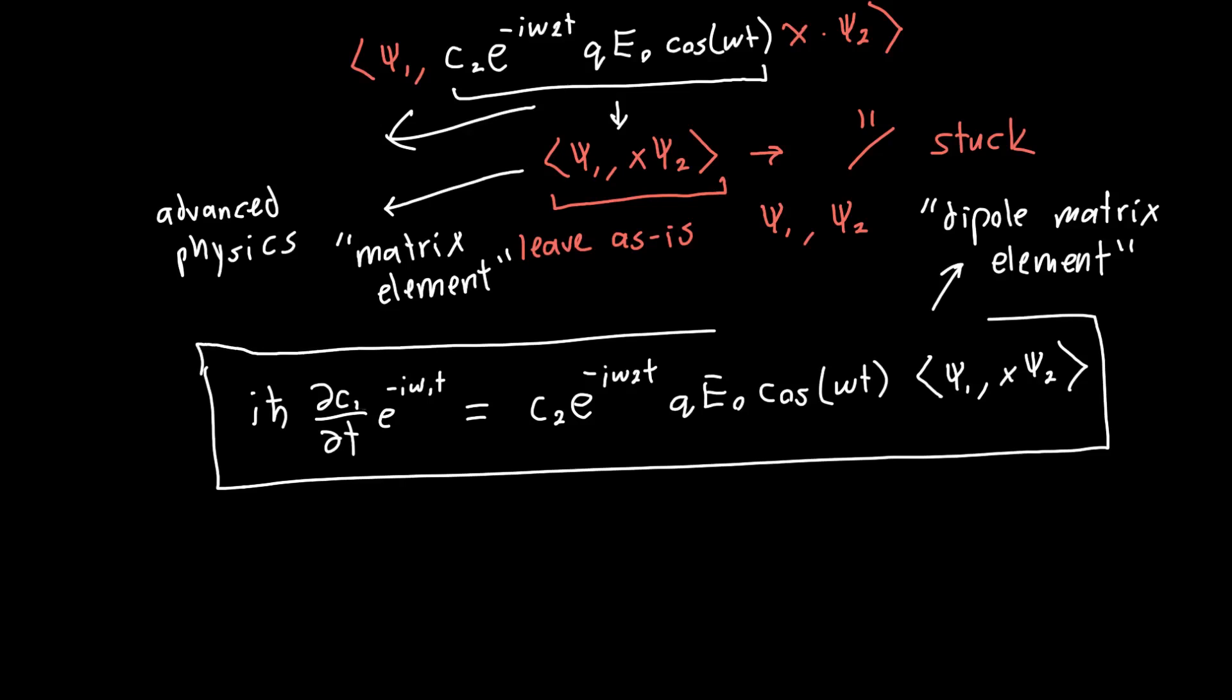If you work this out by taking the inner product with psi 2 instead, you'll get a similar equation where you just swap c1 and c2, omega 1 and omega 2. ih bar dc2 dt e to the minus i omega 2t is equal to c1 e to the minus i omega 1t q e naught cosine of omega. Let's call this omega l for omega light, the light that we're applying, multiplied by a different matrix element, psi 2 with x times psi 1. This is actually a complex conjugate of this, but we'll go into that later.